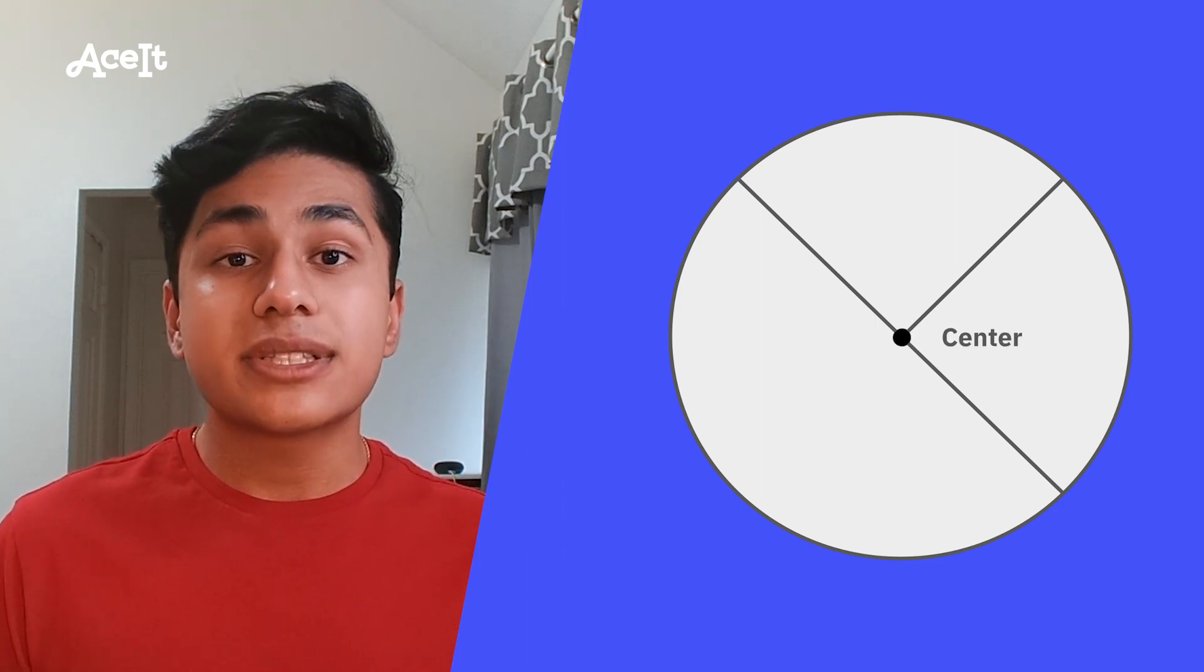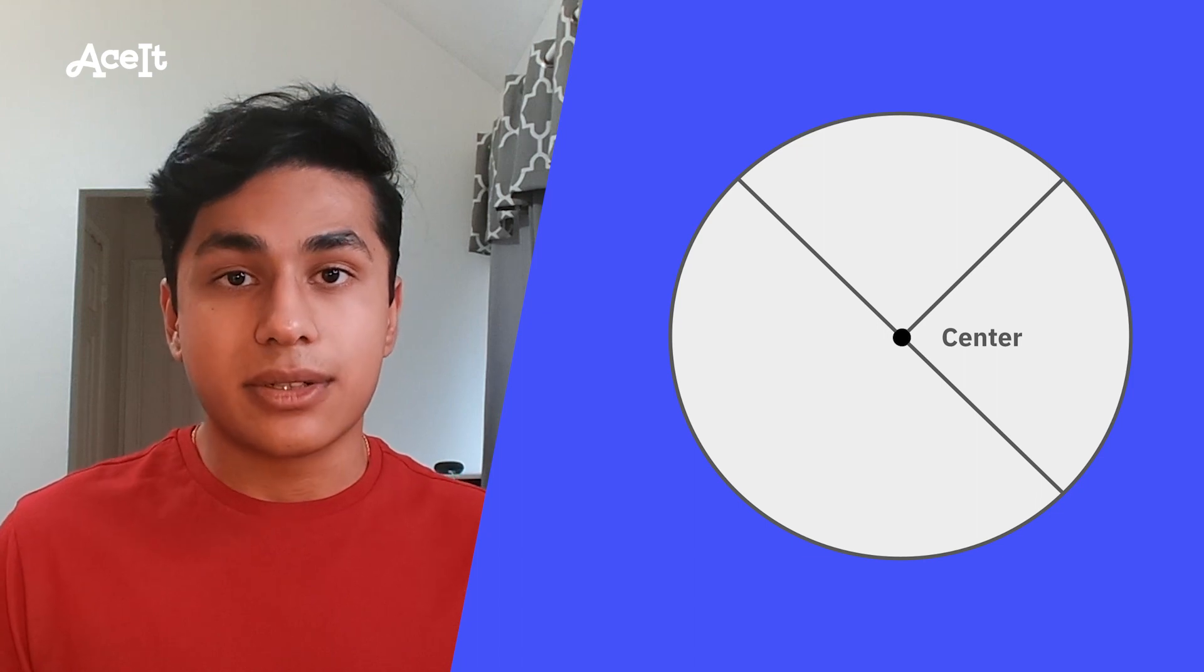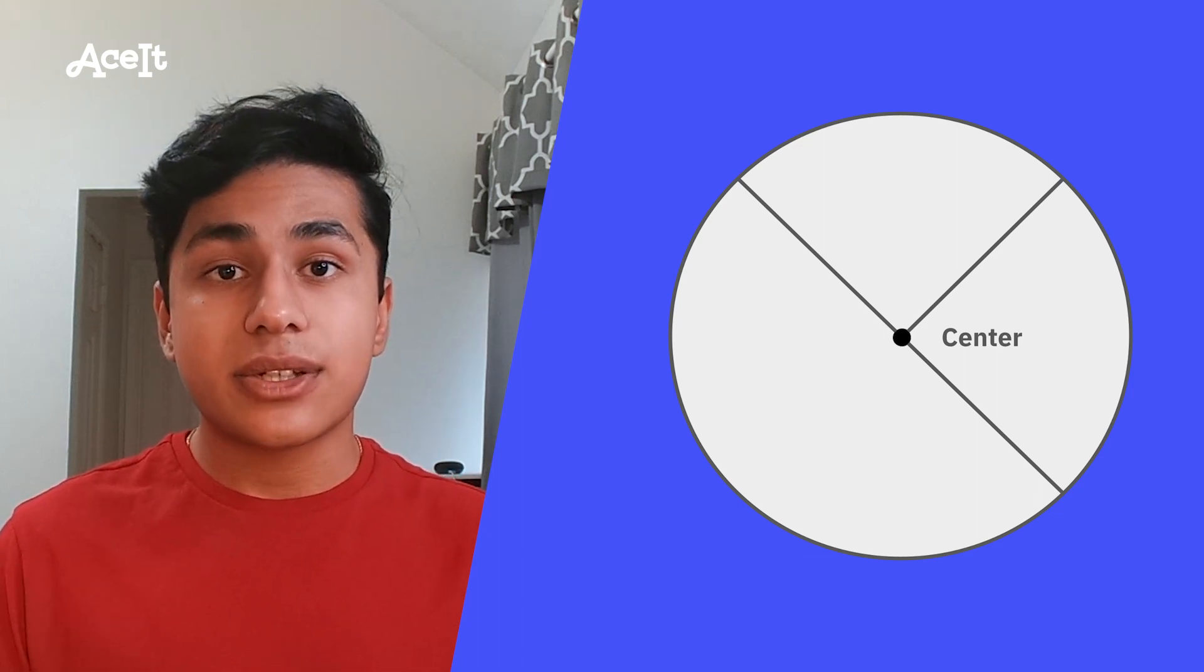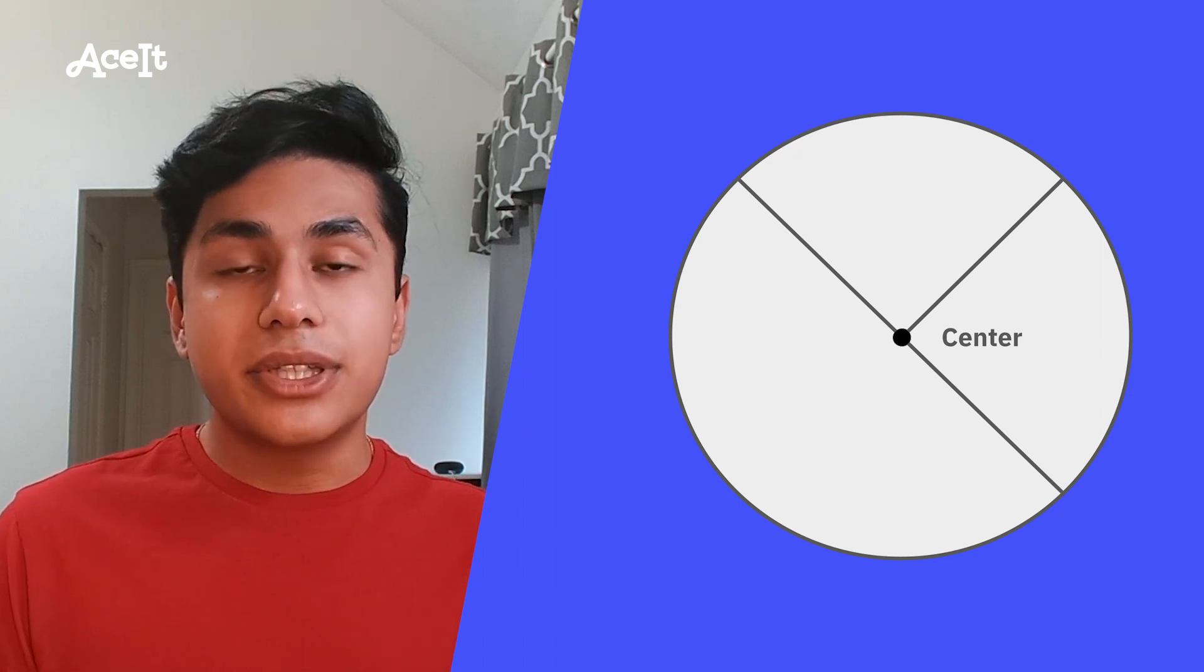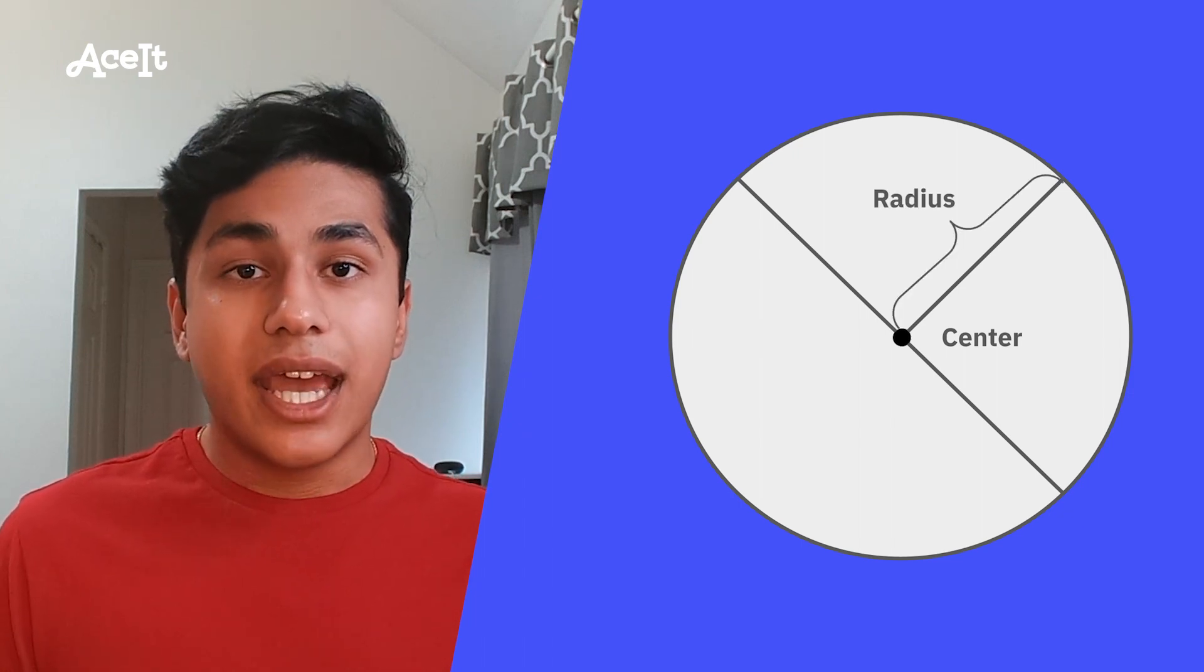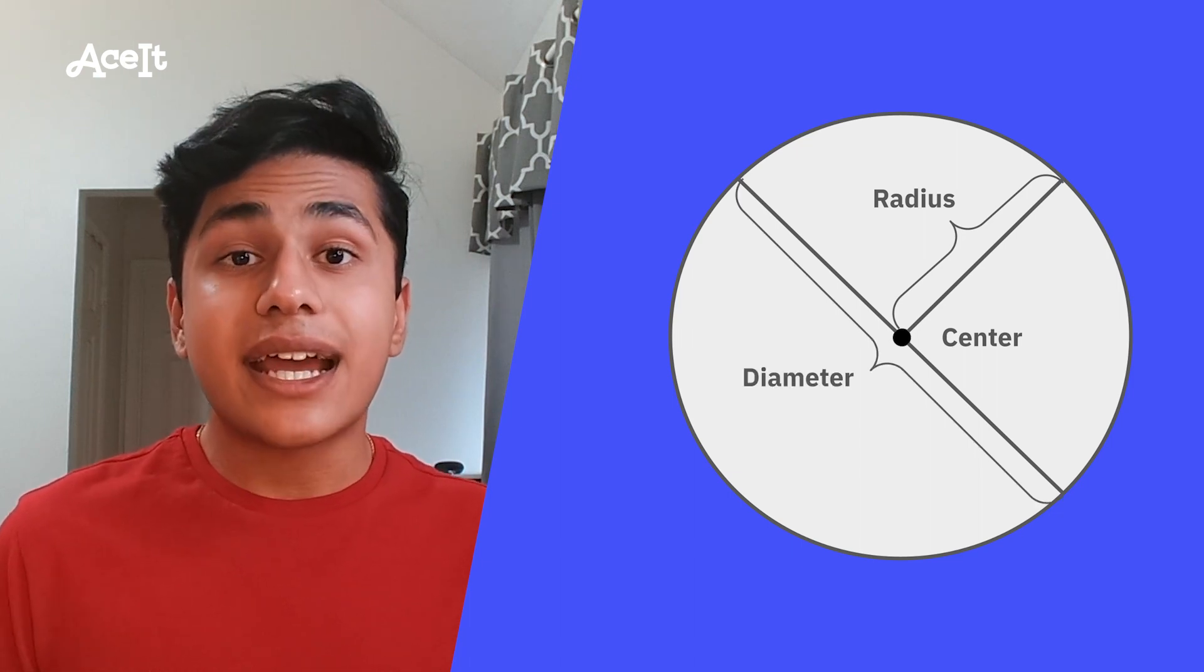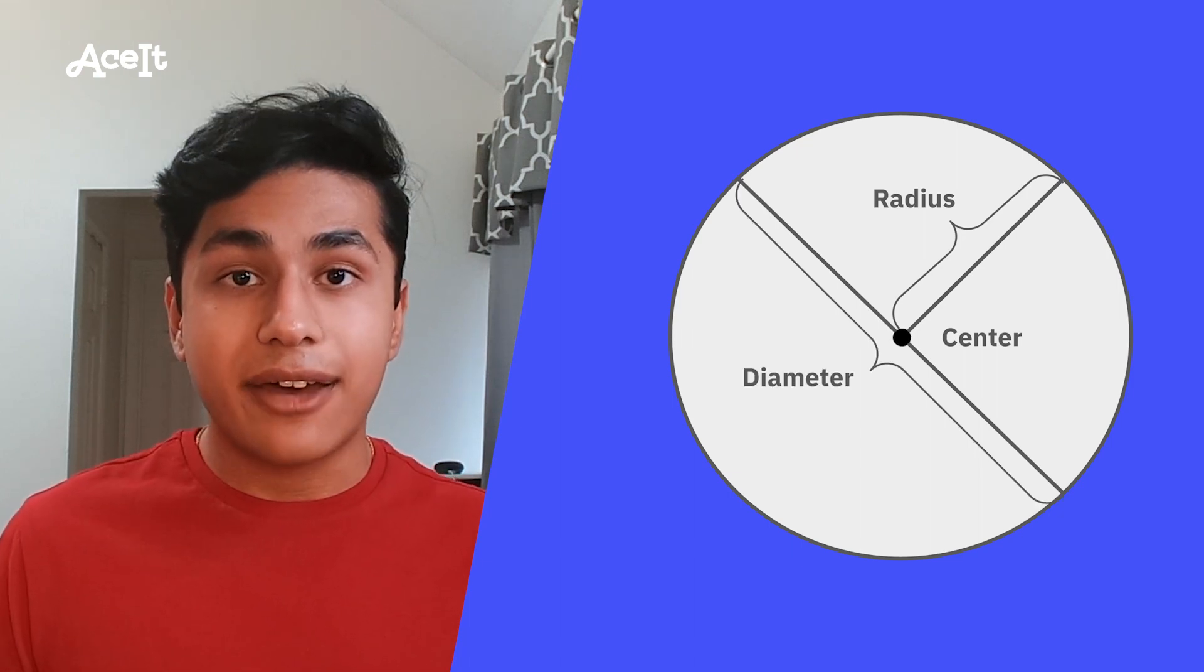The center is pretty self-explanatory, but it's the point that's in the middle of the circle. If you take a line that stretches from the center of the circle to the edge of the circle, you get the radius. And if you multiply the radius by 2, you get the diameter, and the diameter is the line that cuts the circle perfectly in half.